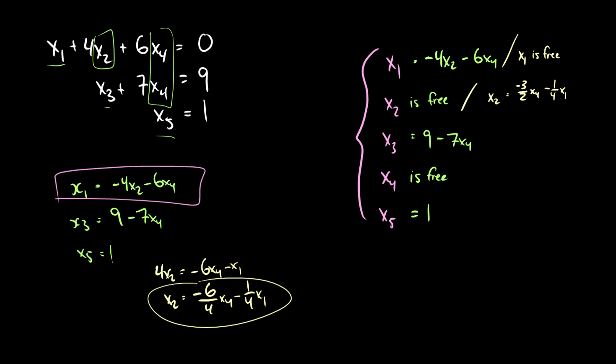So x1, x2, x3, x4, and x5 will all have the same assignments, regardless of which one we pick as being free. But it might be a little bit more difficult to get them if you're doing it by hand, with x2 equal to negative 3 over 2x4 minus 1 fourth x1.